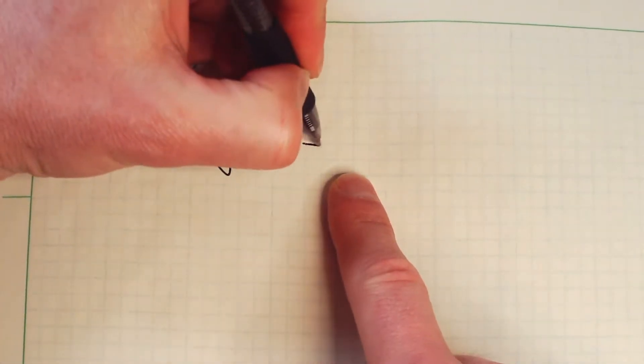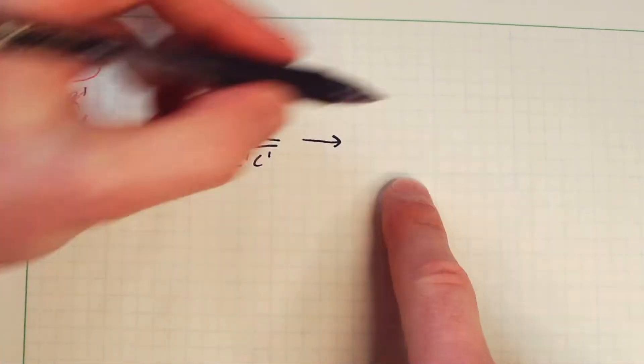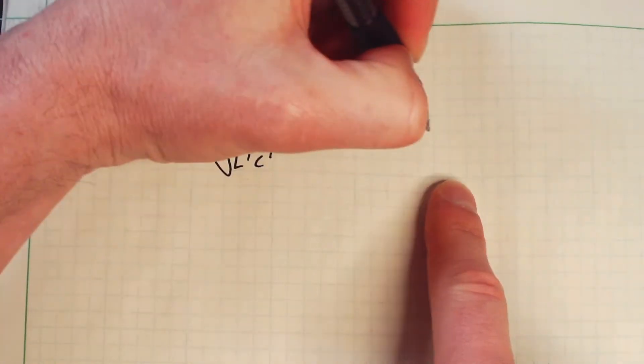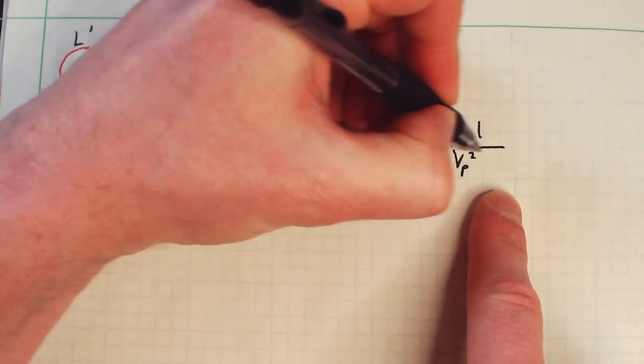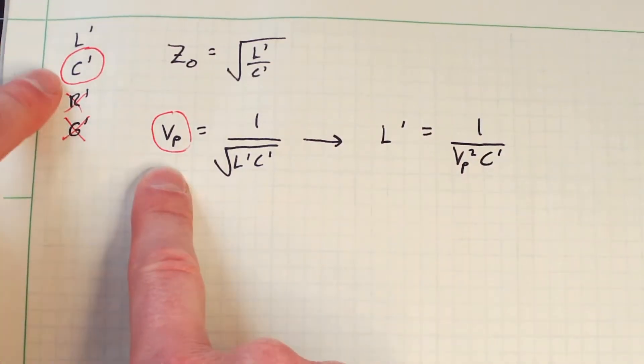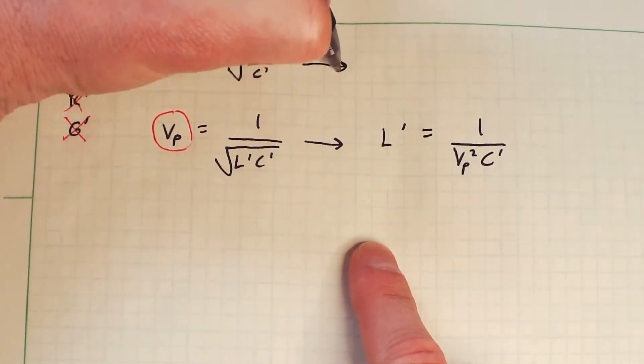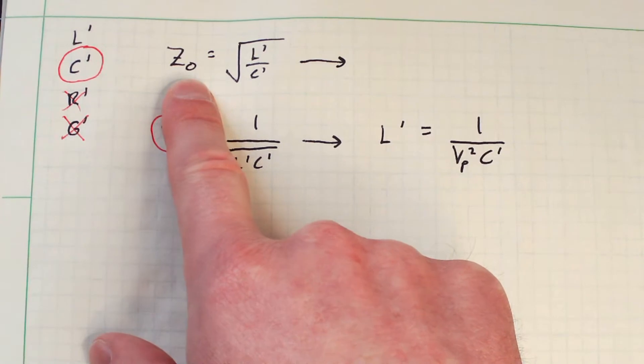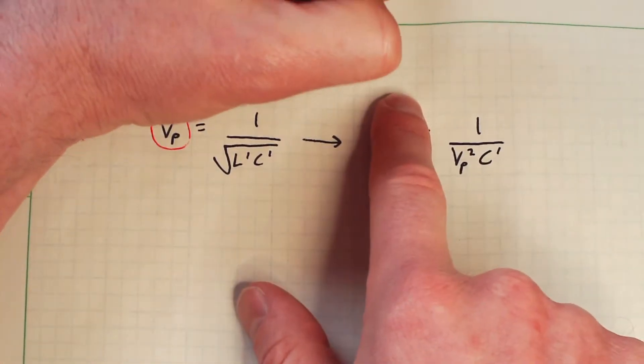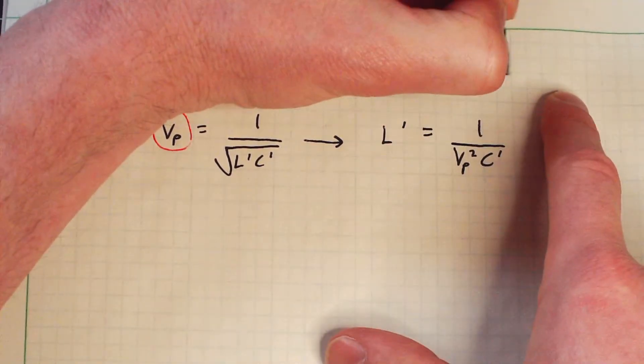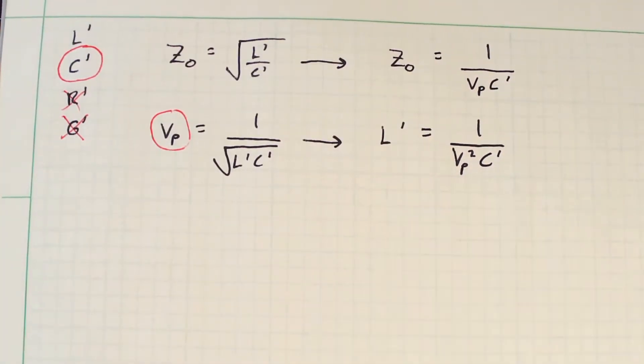So let's start by doing a little bit of substitution. I'm going to solve for L' in terms of Vp and C'. And what I will find is that L' satisfies 1 divided by Vp squared times C'. So you notice if I know these two parameters, I can effectively calculate L' over here. Likewise, if I then do a little bit of substitution and calculate Z0 in terms of these two parameters, you find that Z0 is equal to 1 divided by Vp times C'. So just the little square goes away.